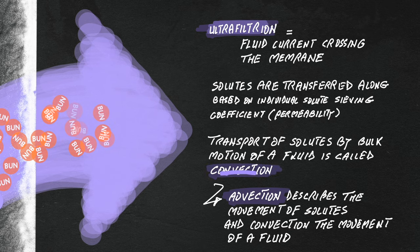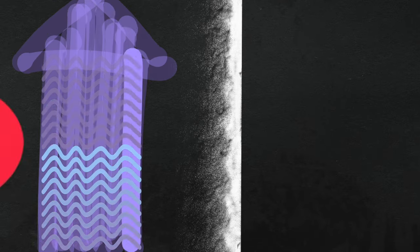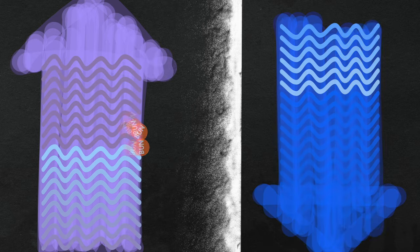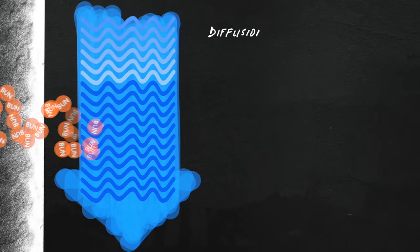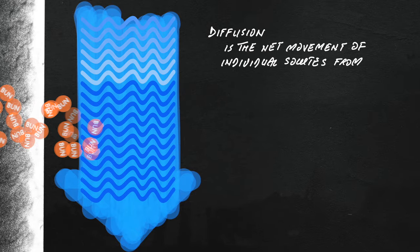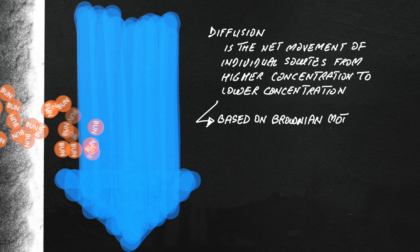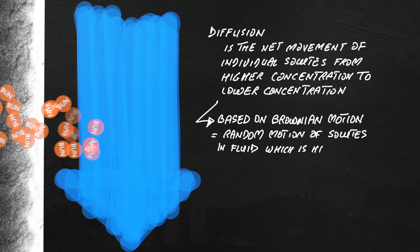Diffusion, on the other hand, does not involve the bulk transfer of plasma water and solutes within, but the individual solute movement across the membrane down its concentration gradient. Fueled by Brownian random motion, which is highly dependent on molecular weight or size.